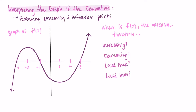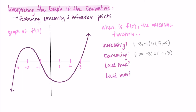Let's go through these four things pretty quickly, since I've covered this in a previous video, and I want to get to the concavity and inflection points. Increasing is where the derivative is above the x-axis, so that's from negative 3 to negative 1, and from 3 to infinity. Decreasing is where the graph of the derivative is below the x-axis, so that's from negative infinity to negative 3, and from negative 1 to 3. Remember, increasing means a positive derivative — above the x-axis — and decreasing means a negative derivative — below the x-axis.